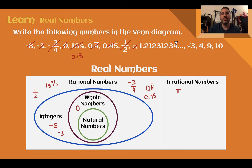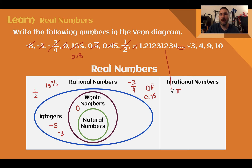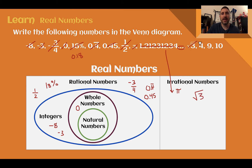1.21231234... — this looks like it might have a pattern: 1, 2, 1, 2, 3, 1, 2, 3, 4. But it is not a repetitive pattern. This one goes on forever with no repeating pattern, so it is irrational. The square root of 3 is not a perfect square, so that is irrational. 4, 9, and 10 are all positive counting numbers, so they are natural numbers.